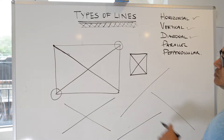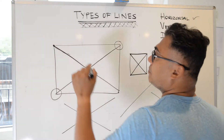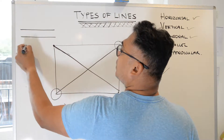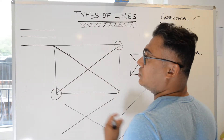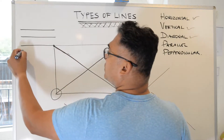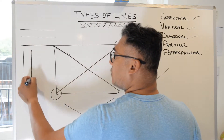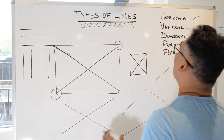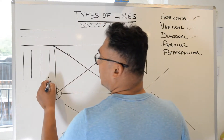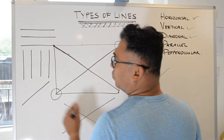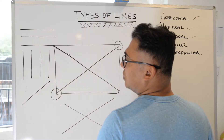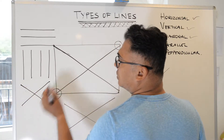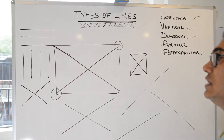Just to recap: horizontal lines move from left to right, or east to west. Vertical lines go north to south, top to bottom, or upwards and downwards. Diagonal lines go from one corner downwards to another corner, or from another corner to another corner. So those are diagonal lines.